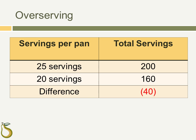Overserving can lead to a few more issues in addition to increased food costs. If participants are unable to eat all that they were served, excess plate waste will result. Additionally, if the recipe was prepared to serve a specific number of meals, overserving puts the kitchen at risk of running out of food before the end of meal service. For example, a kitchen prepares enough taco filling to yield 200 servings. If the taco meat is overserved, the planned servings will be reduced by 40 and could potentially leave the last participants who wanted this option disappointed.